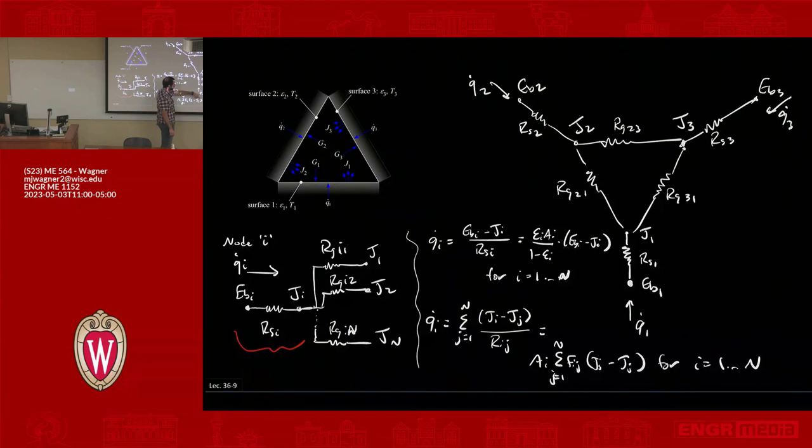But let's say we specify Q dot one is zero, but it's adiabatic. And you'll solve for this and what will you see? I guess maybe there's a question: what will you see if Q dot one is zero in terms of how J1 and EB1 relate to each other? Any ideas? Okay, so Q dot one is zero. These are—this is a driving potential. Think of these as like temperatures.